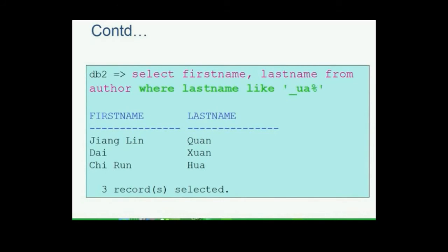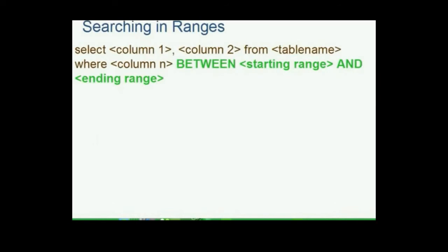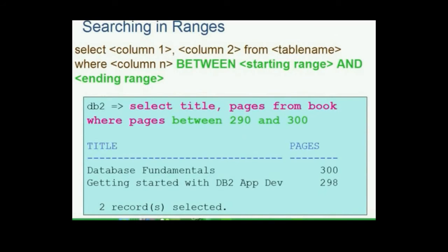So far we have searched data records based on mathematical operators and string patterns. We can also look for books whose number of pages is more than 290 but less than 300 using: SELECT title, pages FROM book WHERE pages >= 290 AND pages <= 300. We can rewrite this using the BETWEEN AND clause: SELECT title, pages FROM book WHERE pages BETWEEN 290 AND 300. The results are the same, and this is a better approach for searching in ranges as the values are inclusive.